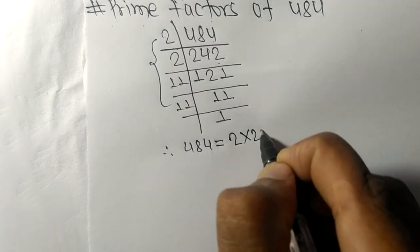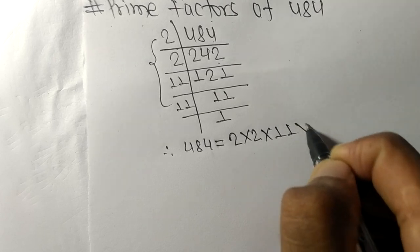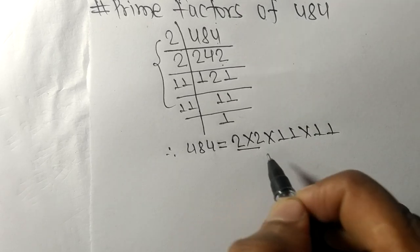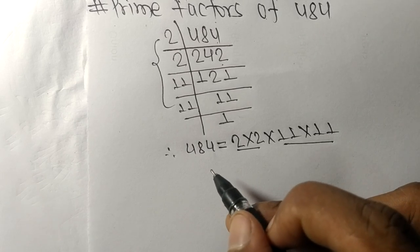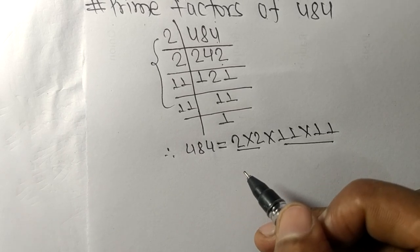Therefore, 484 is equal to, from this side we have 2 times 2 times 11 times 11. So 2 and 11 are the prime factors of 484.